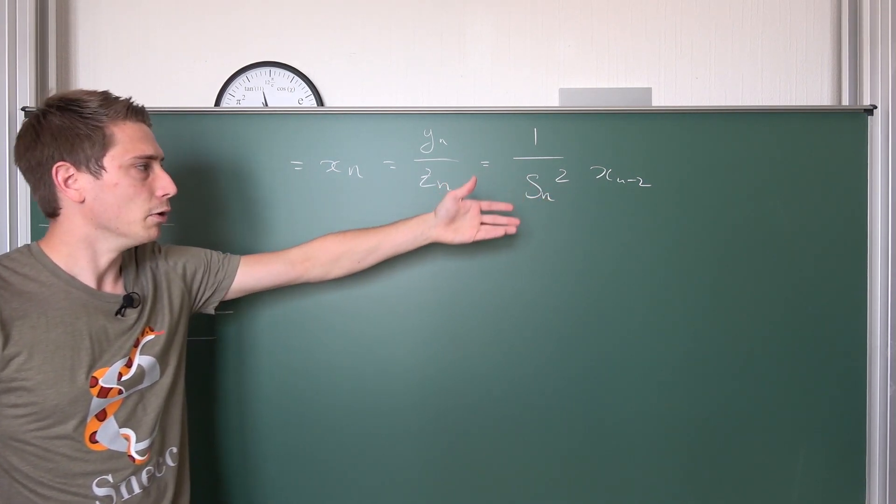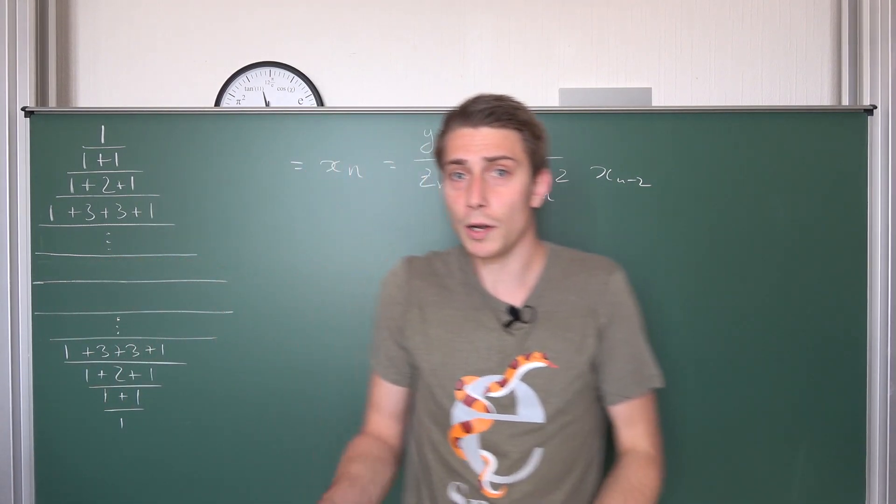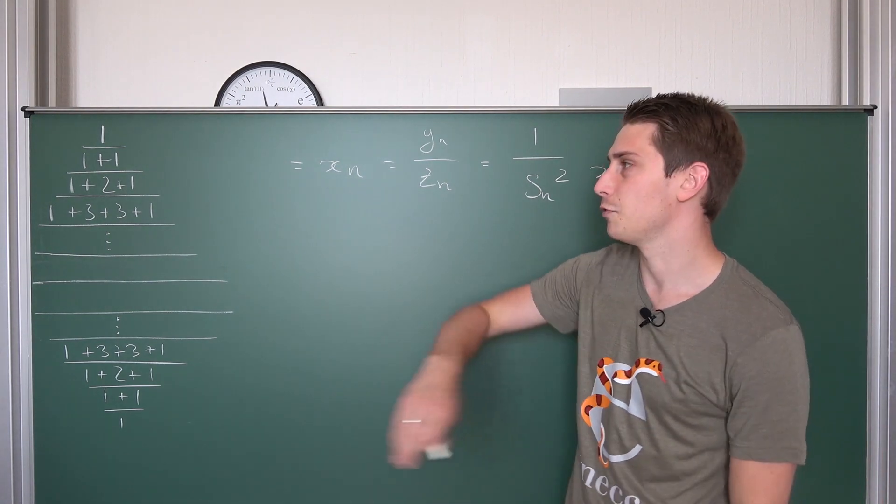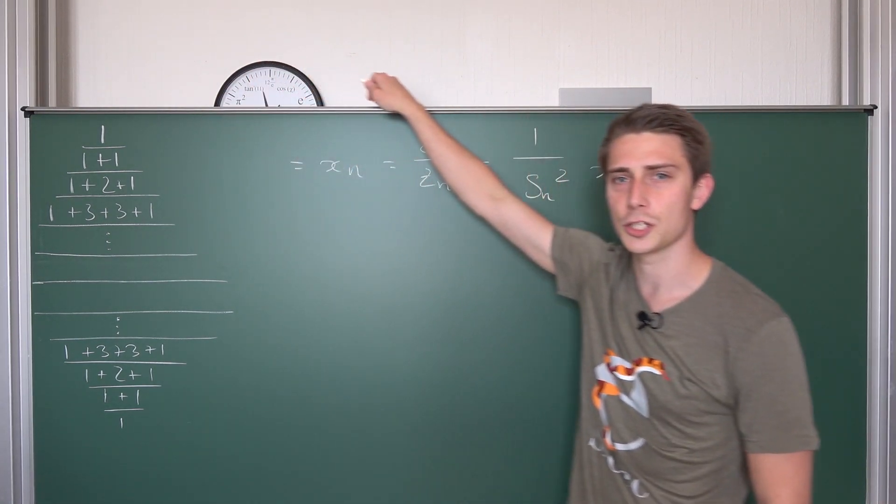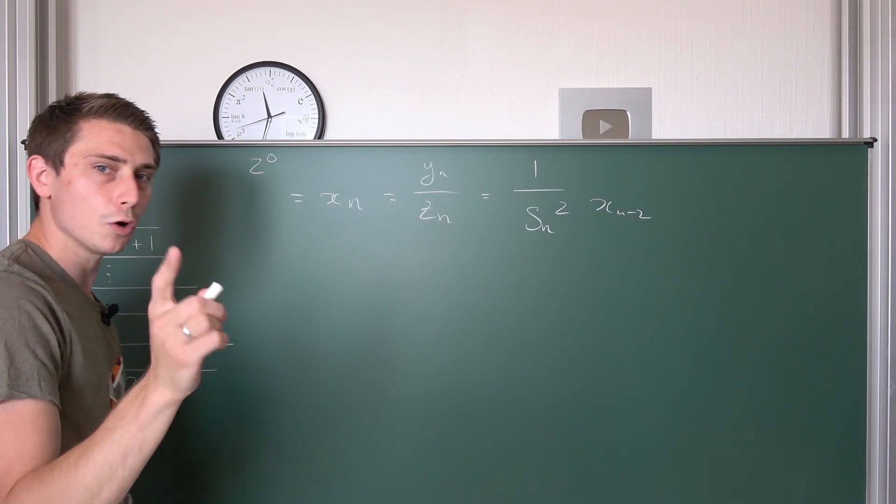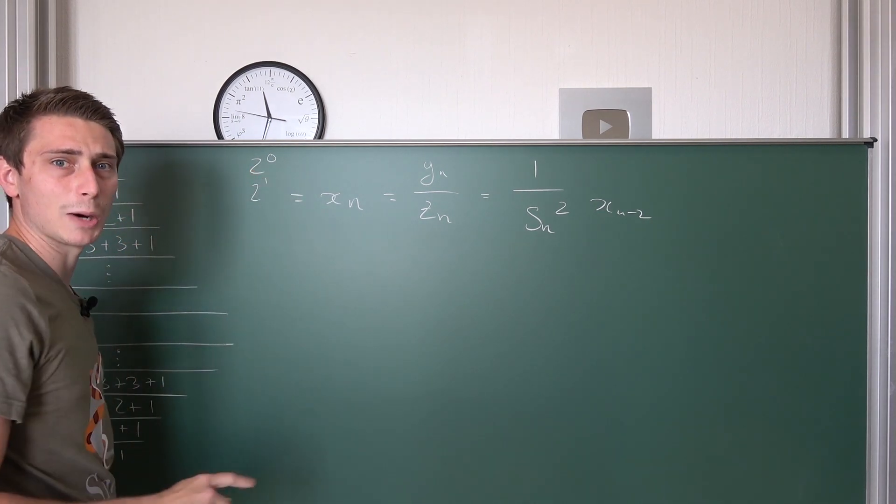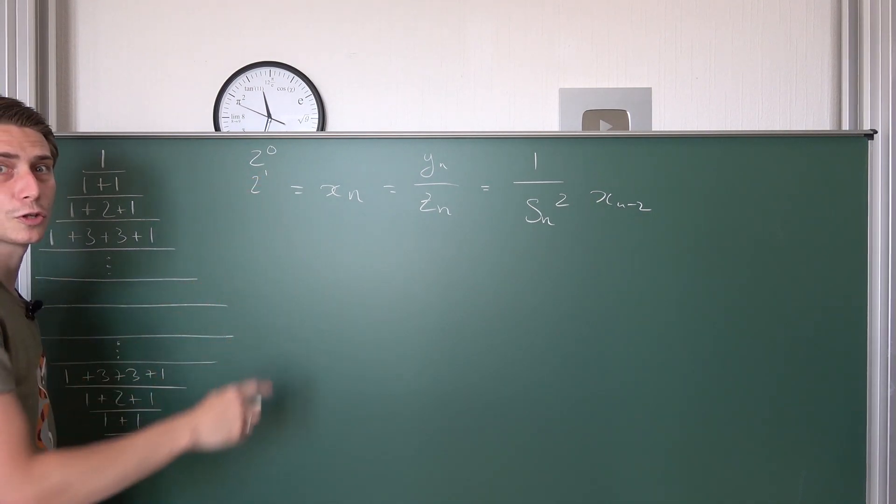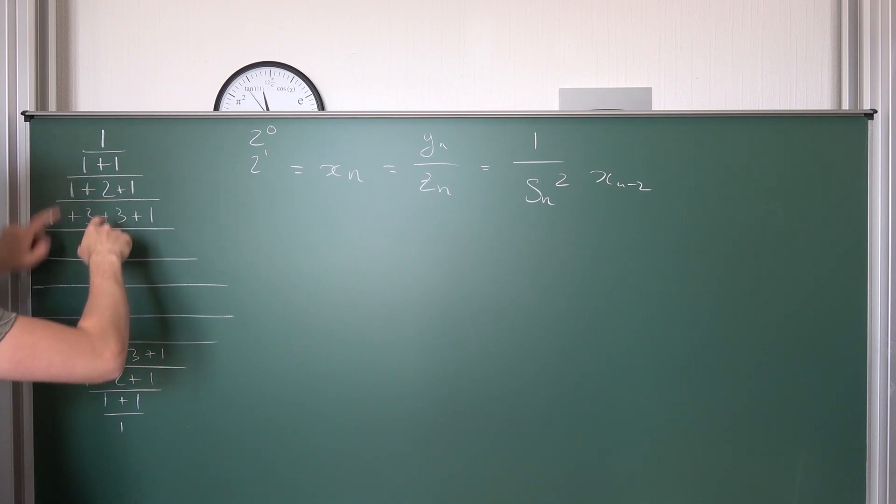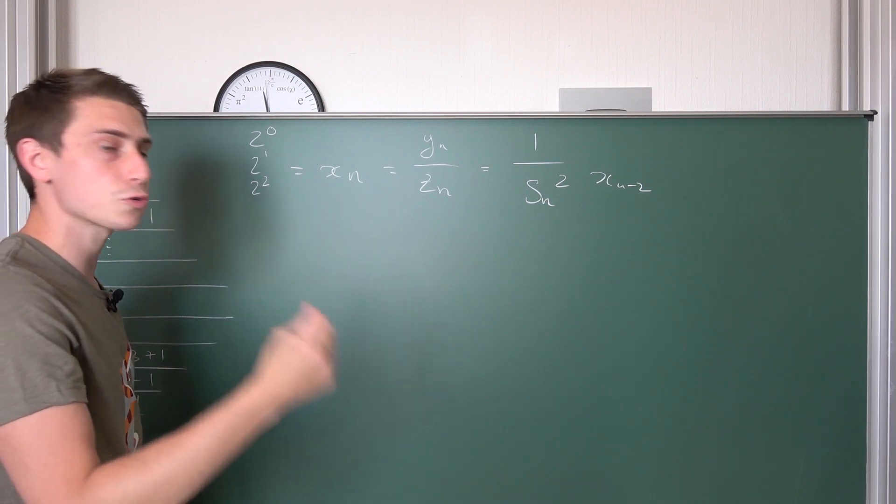Now we just need to take a look at what the summation of the nth row actually looks like. This is the only thing we really need to compute everything else. So let us take a look at the first row. So the first row is just 1. 1 was 2 to the 0th power. First row, 2 to the 0th power. Second row, it's going to give us 2 to the 1st power. Then we have the third row, but this is 1 plus 1 plus 2 is going to give us 4. This is 2 squared. Third row, 2 squared.